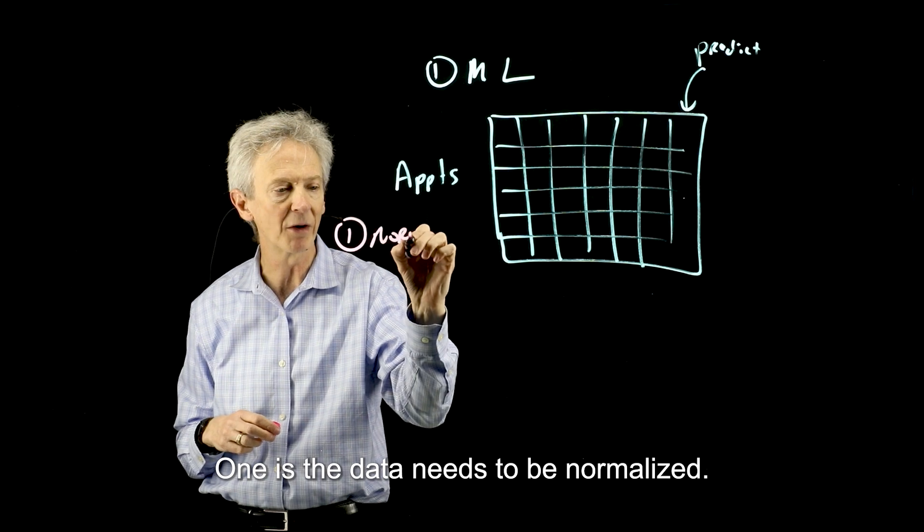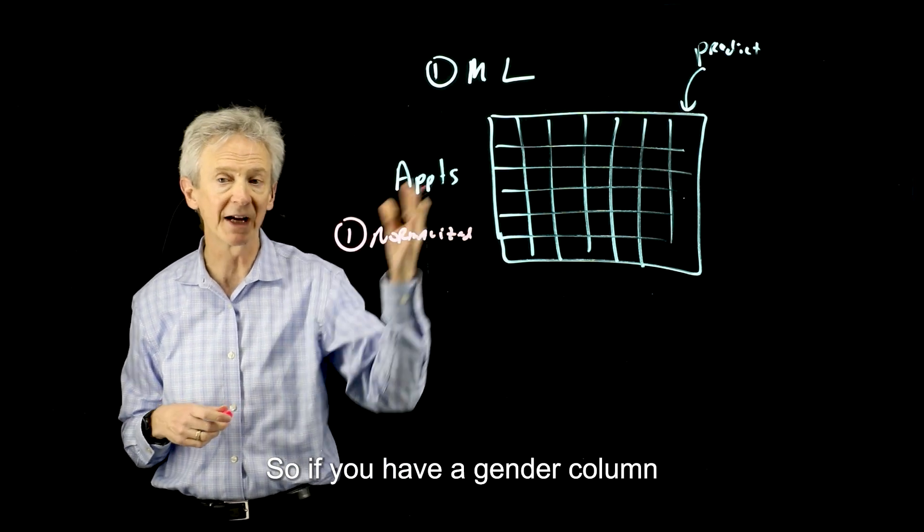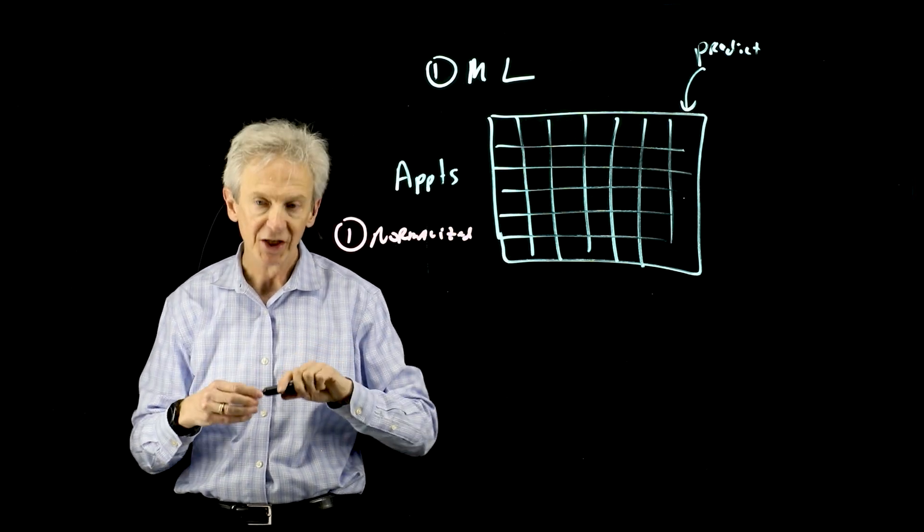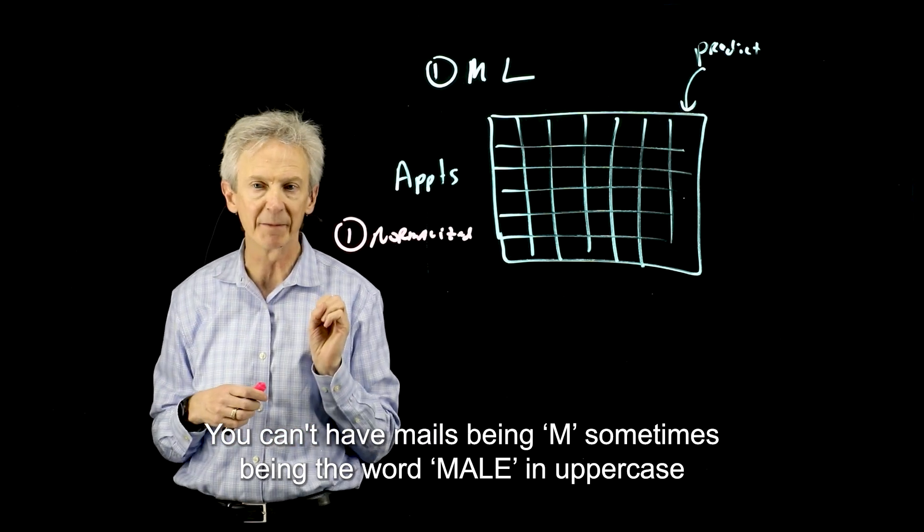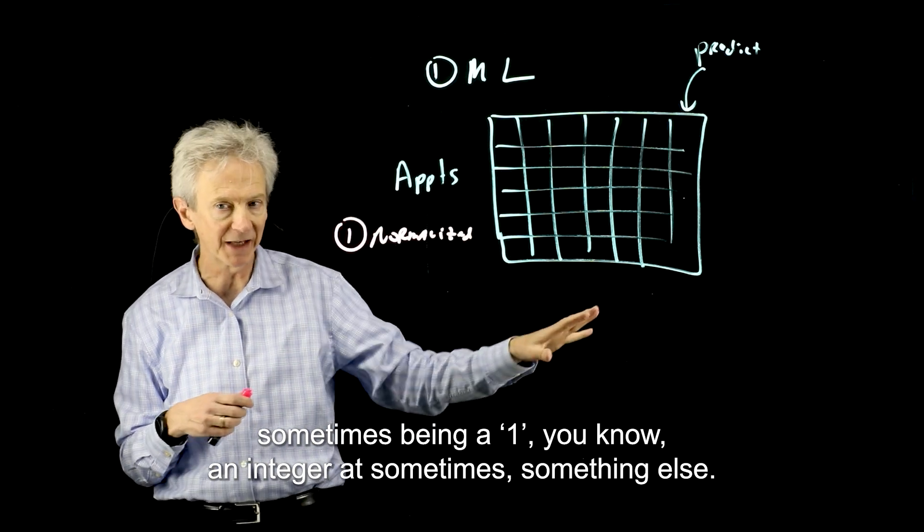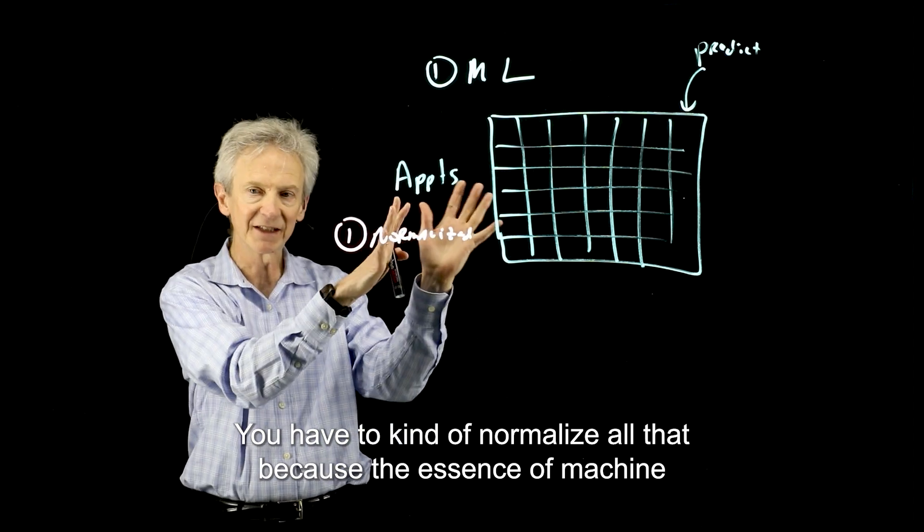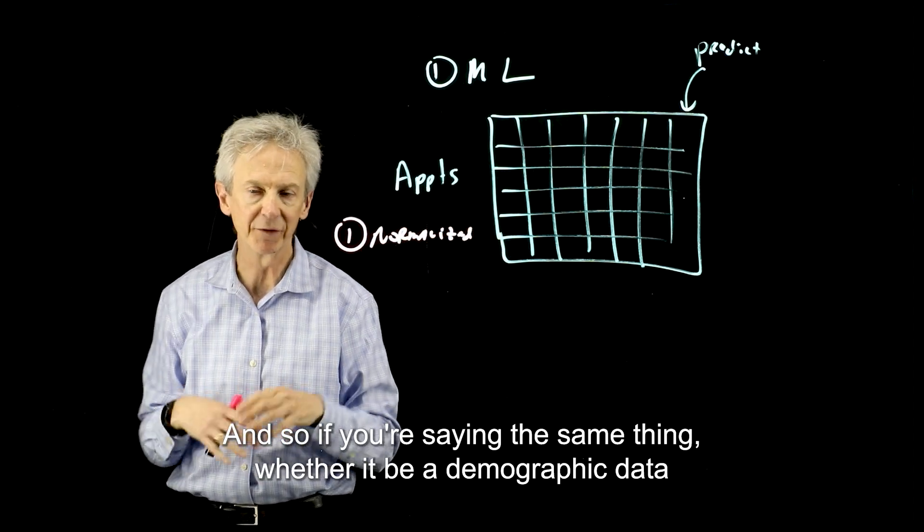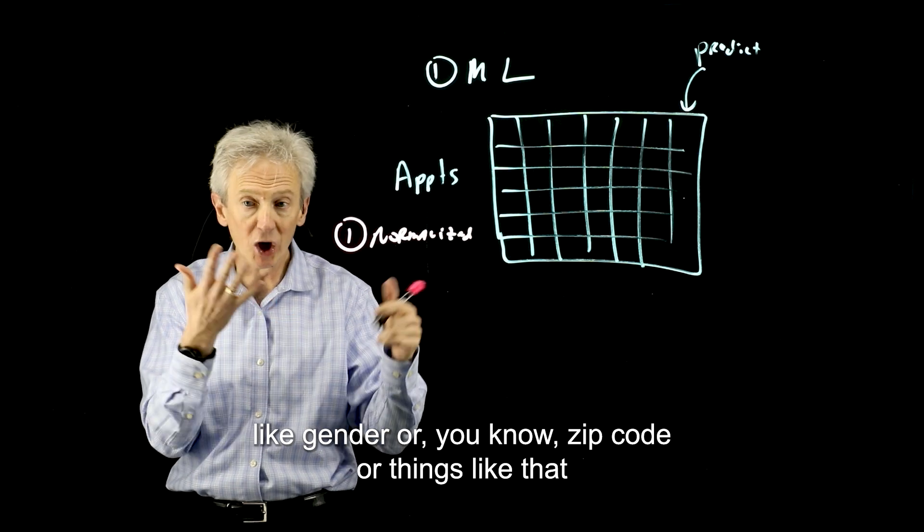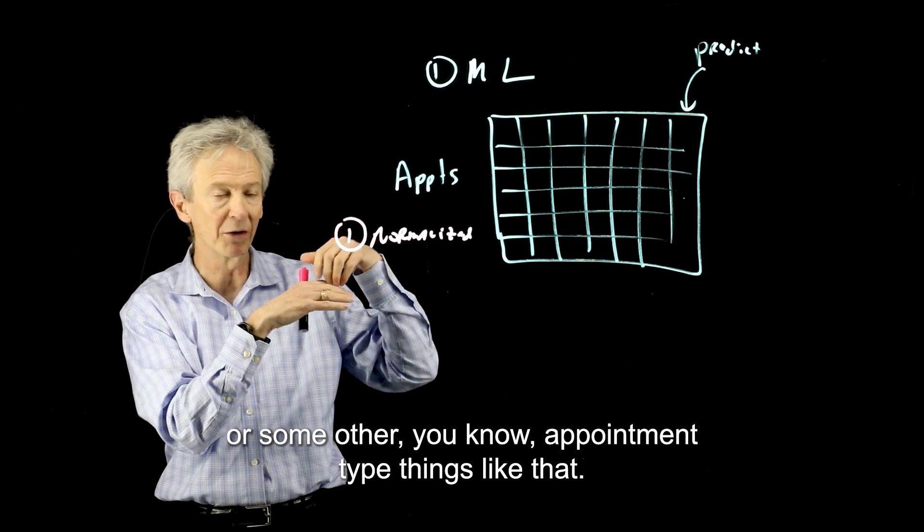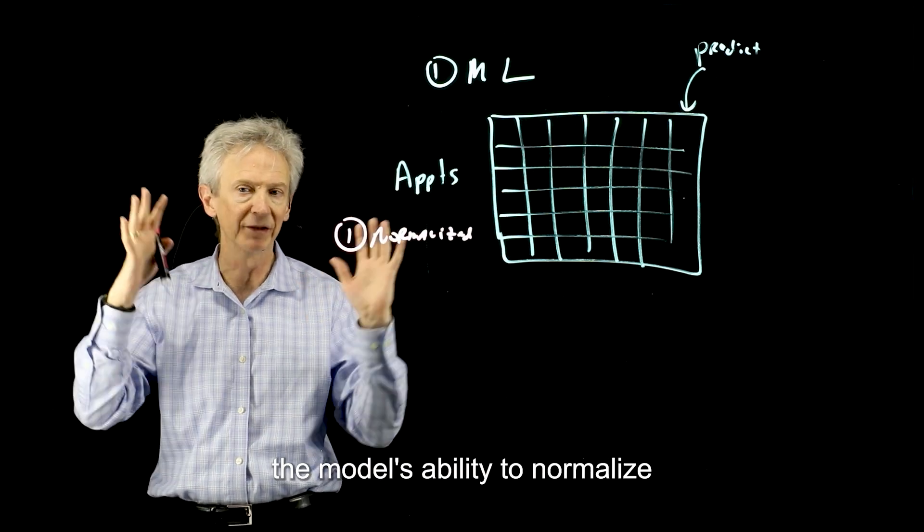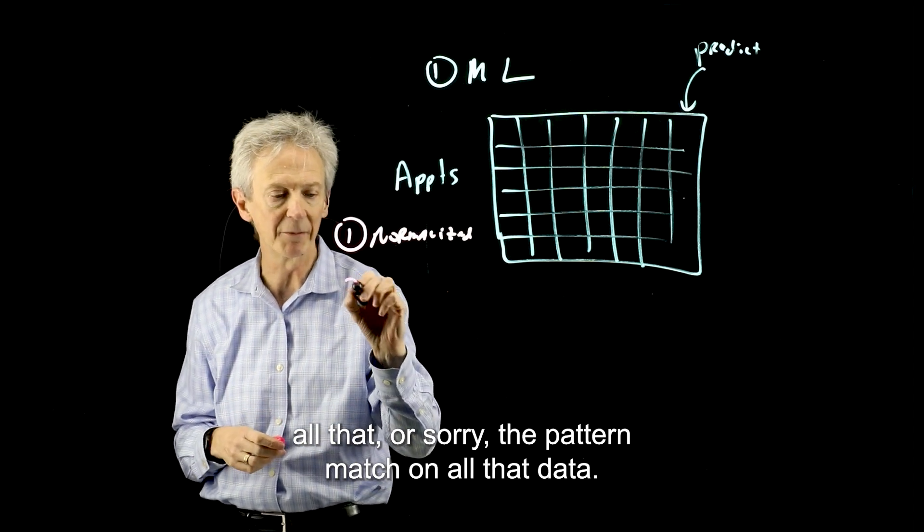You need to supply the data here, and here are the things you need to think about. One is the data needs to be normalized. So if you have a gender column and you think that might impact whether somebody's going to show up or not, you can have males being M sometimes, being the word male in uppercase sometimes, being a one, an integer sometimes, something else. You have to normalize all that because the essence of machine learning is to pattern match. If you're saying the same thing, whether it be demographic data like gender or zip code or appointment type, if you don't normalize it, you're going to hurt the model's ability to pattern match on all that data.